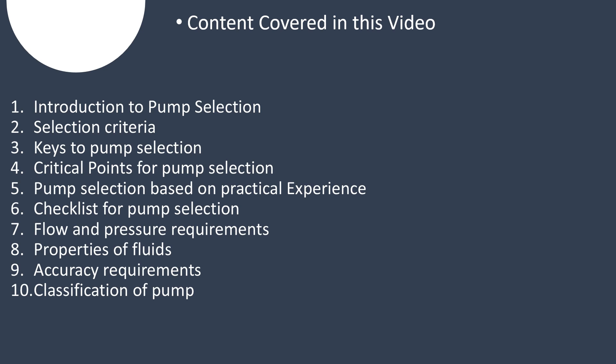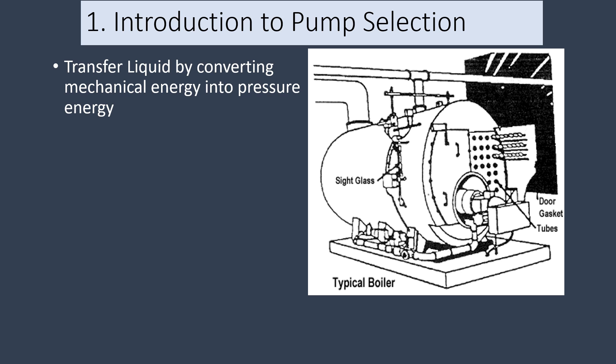Now let's start with an introduction to pump selection. Pumps transfer liquids from one point to another by converting mechanical energy from a rotating impeller into pressure energy. The pressure applied to the liquid forces the fluid to flow at the required rate and to overcome friction, or head, losses in piping, valves, fittings, and process equipment.